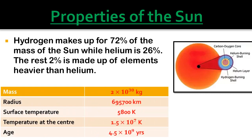The table of properties of the Sun shows: mass is 2 × 10³⁰ kg; radius is 695,700 kilometers; surface temperature is 5,800 Kelvin; temperature at the center is 1.5 × 10⁷ Kelvin; and the age of the Sun is 4.5 × 10⁹ years.